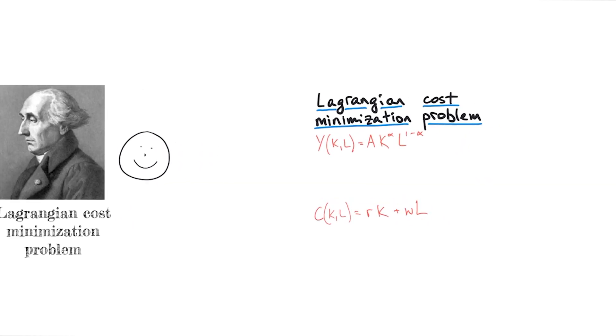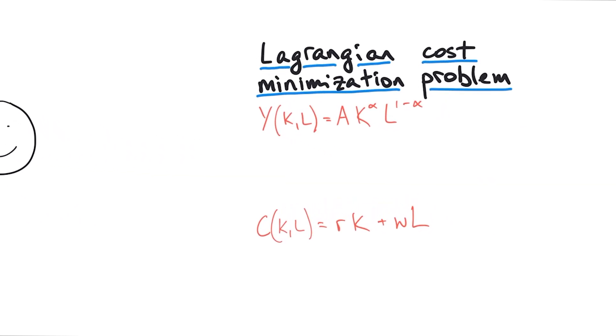So let's review. We have our production function and as always it has two inputs: capital and labor. A is productivity, K is capital, alpha is the capital share of production, and L is labor, just like before.